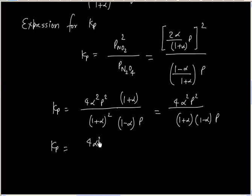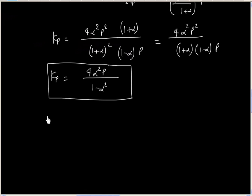Kp equals 4 alpha squared P over 1 minus alpha squared. Total pressure is 1.5 atmospheric pressure. Alpha is 0.25.